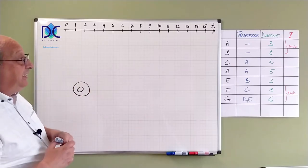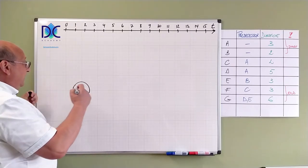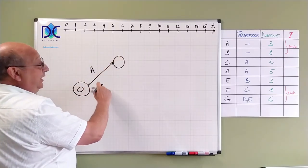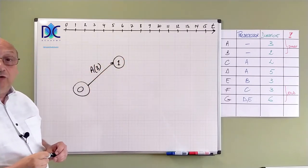Now we have activity A, no predecessors. So it starts immediately at the beginning of the project. So we have A, activity A with a duration of three periods, which ends up in node one.